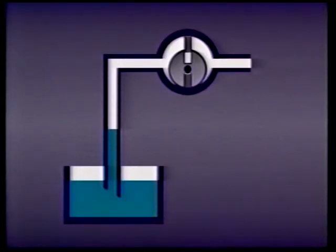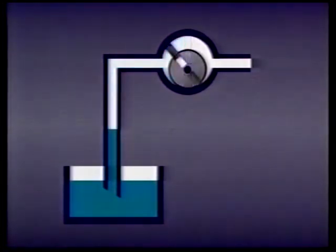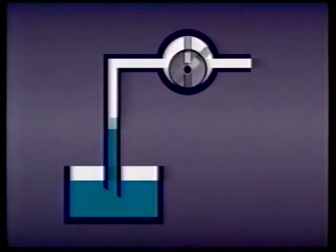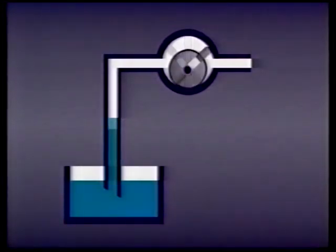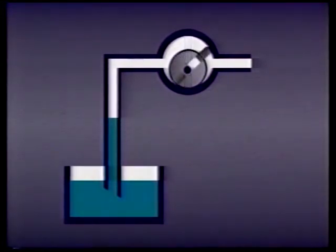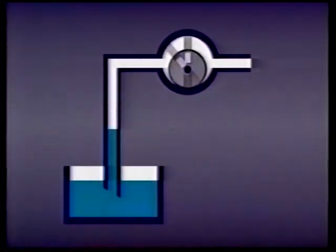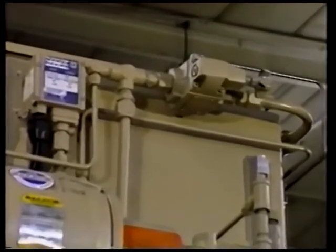Now there's one final thing to keep in mind about the suction side of a pump: priming. Priming a pump means filling the pumping mechanism with fluid. If it's not primed, it is full of air — or air bound. This air must be removed or purged from the pump and the suction line before the pump can be safely operated. Running an air-bound pump for even a few minutes can seriously damage it from the lack of lubrication.